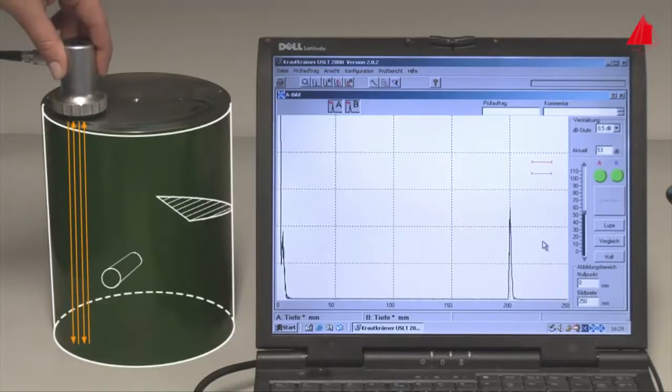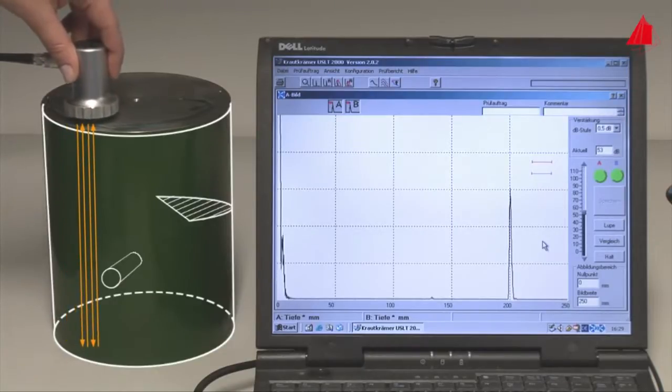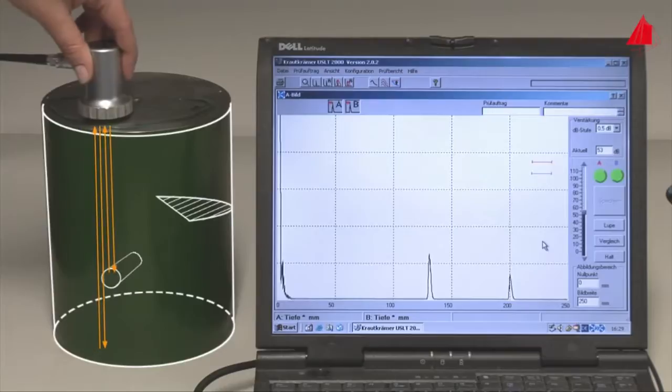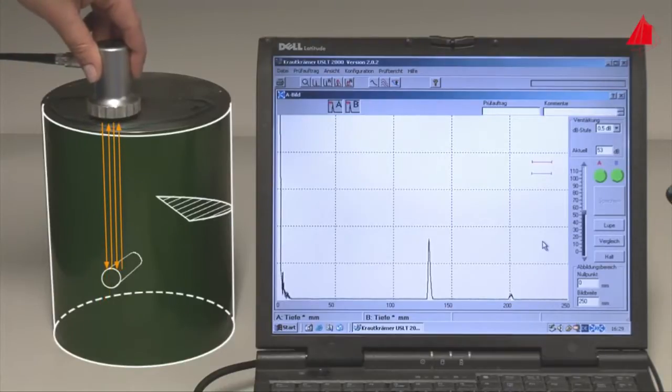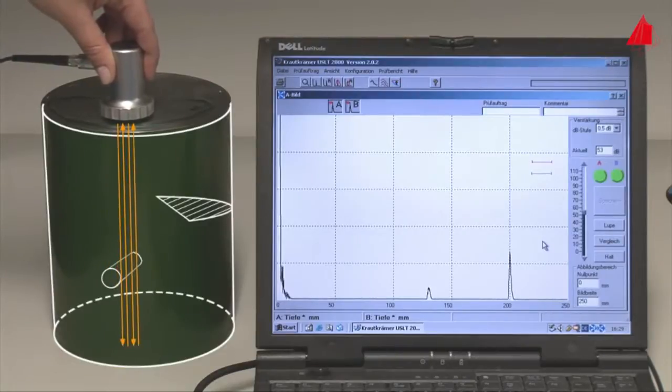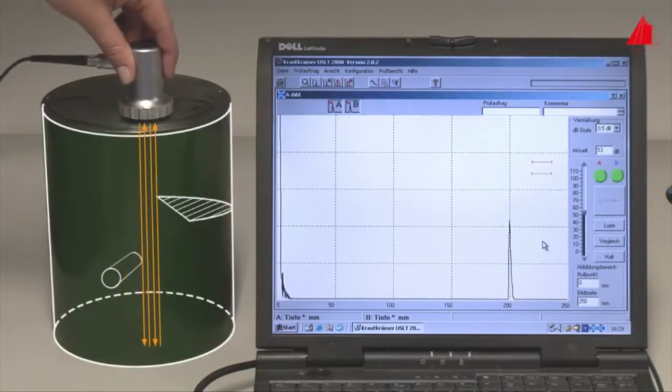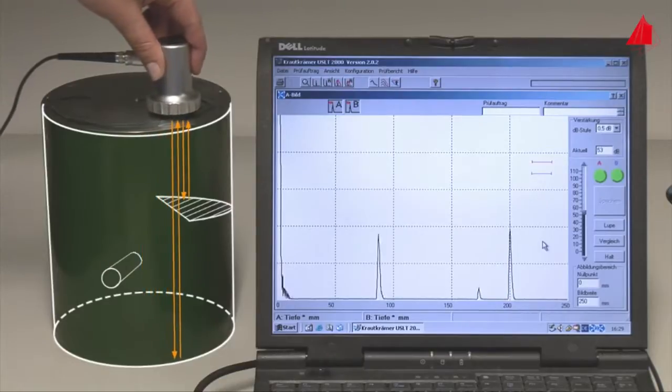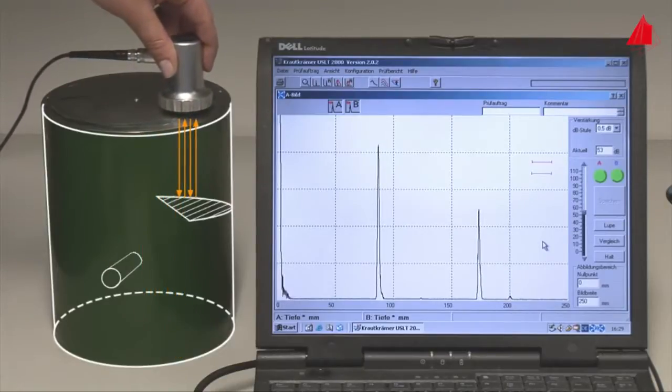And these are the defects: a drill hole and a saw cut, filled up near the surface and painted. They are not visible from the outside. The drill hole is in a depth of 130 millimeters. The saw cut is 87 millimeters below the surface.